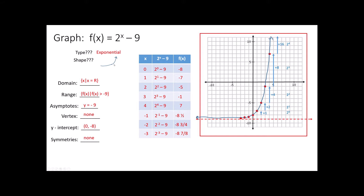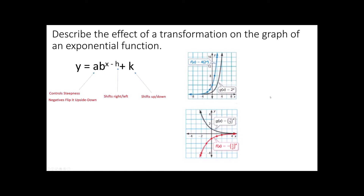We were able to predict before we ever started plotting points what this was going to look like. I want to do a couple more of these to illustrate the point. Notice we started at the point 0, negative 8, and then grew by powers of 2. In general, if we look at the vertex form of an exponential function, the steepness of the function is always controlled by the number in front of my exponent term — my b to a certain power. Anything I do to the exponent controls right and left, and anything I do to the end of my function controls up and down.